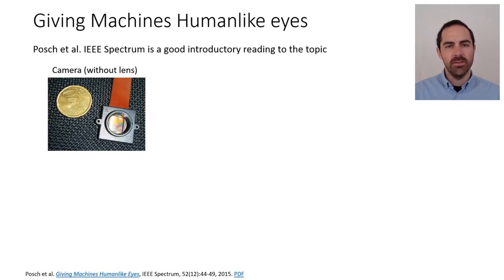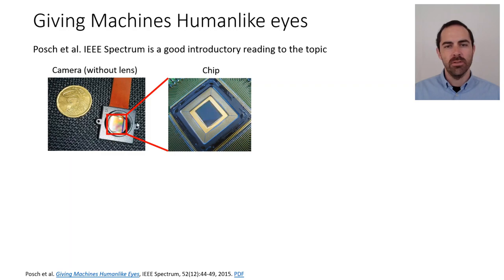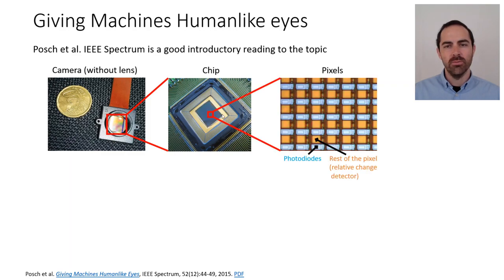To set up where we are: we have a camera and the camera has a chip. Zooming in, the chip has some pixels. In the case of an event camera, the pixels have two parts: one is the photo diode that converts light into voltage, and then the rest of the pixel detects relative intensity changes.